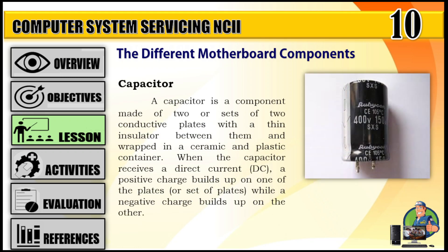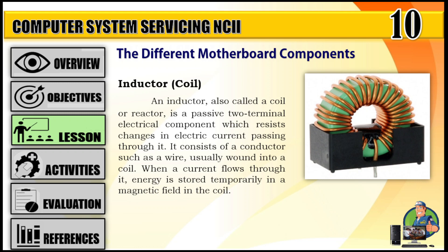Capacitor: a component made of two or sets of two conductive plates with a thin insulator between them, wrapped in a ceramic and plastic container. When the capacitor receives a direct current (DC), a positive charge builds up on one set of plates while a negative charge builds up on the other. Inductor or coil: also called a reactor, is a passive two-terminal electrical component which resists changes in electric current passing through it. It consists of a conductor such as a wire wound into a coil; when current flows through it, energy is stored temporarily in a magnetic field in the coil.